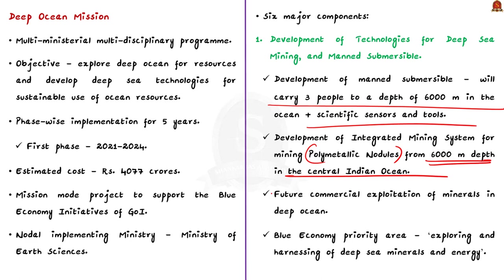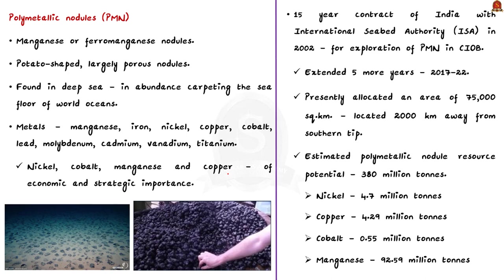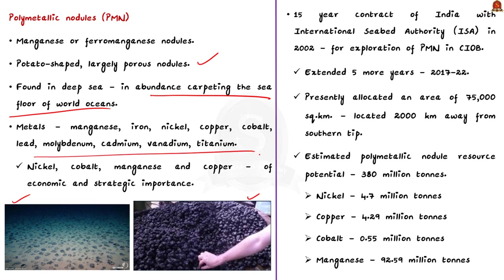Polymetallic nodules, also known as manganese nodules or ferromanganese nodules, are potato-shaped largely porous nodules found in abundance carpeting the seafloor of the world's oceans in the deep sea. These nodules consist of manganese and iron and also contain nickel, copper, cobalt, lead, molybdenum, cadmium, vanadium, and titanium. Among these, nickel, cobalt, manganese and copper are considered to be of economic and strategic importance. India has already signed a 15-year contract with the International Seabed Authority — an institution under the UN Convention on Law of the Sea — for exploration of polymetallic nodules in the central Indian Ocean Basin, signed in 2002 and further extended for five more years from 2017 to 2022. Under this contract, India has been allocated an area of 75,000 square kilometers located about 2000 kilometers from the southern tip of India.